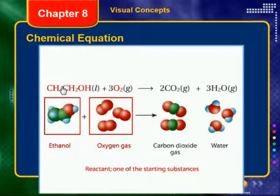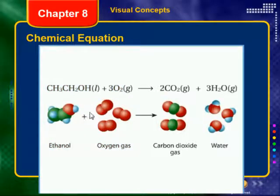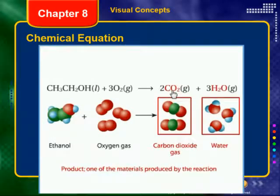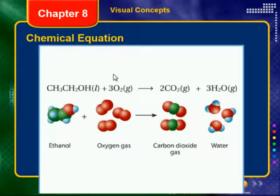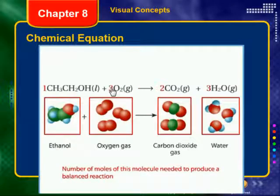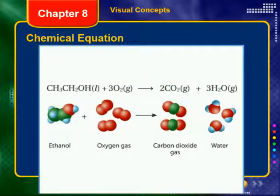Here we have a balanced chemical equation. On the left side, we have the reactants: ethanol and oxygen. On the right side of the arrow, we have products — carbon dioxide gas and water. The reaction is identified by the arrow. We also have the relative amounts denoted by these coefficients before the actual chemicals. These are relative amounts, not absolute amounts, present in each of these reactions.